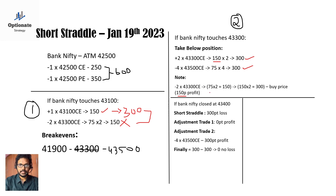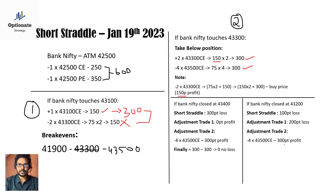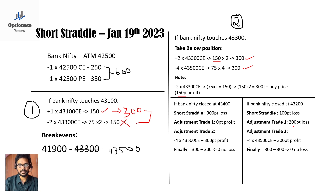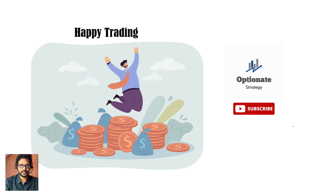If Bank Nifty reverses back and closes at 43200: short straddle is in a 100-point loss, the adjustment trade is in a 200-point loss, but the second adjustment trade gives a 300-point profit. Combining the two losses of 300 against the 300-point profit again gives zero loss. And if Bank Nifty reverses back and closes between 41900 and 43100, you will get a good profit. This is how the extension adjustment works. Hope you got the knowledge — thank you for watching, keep supporting us.